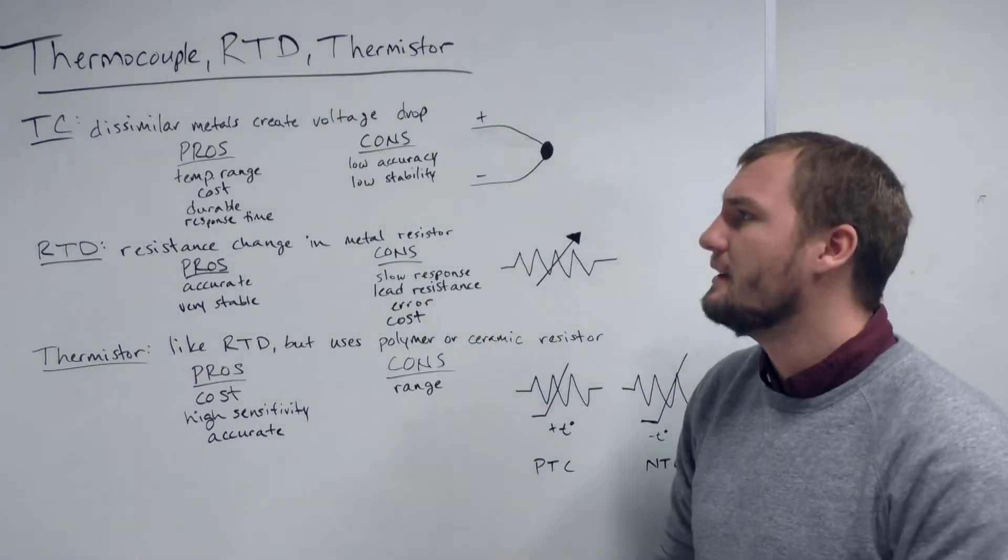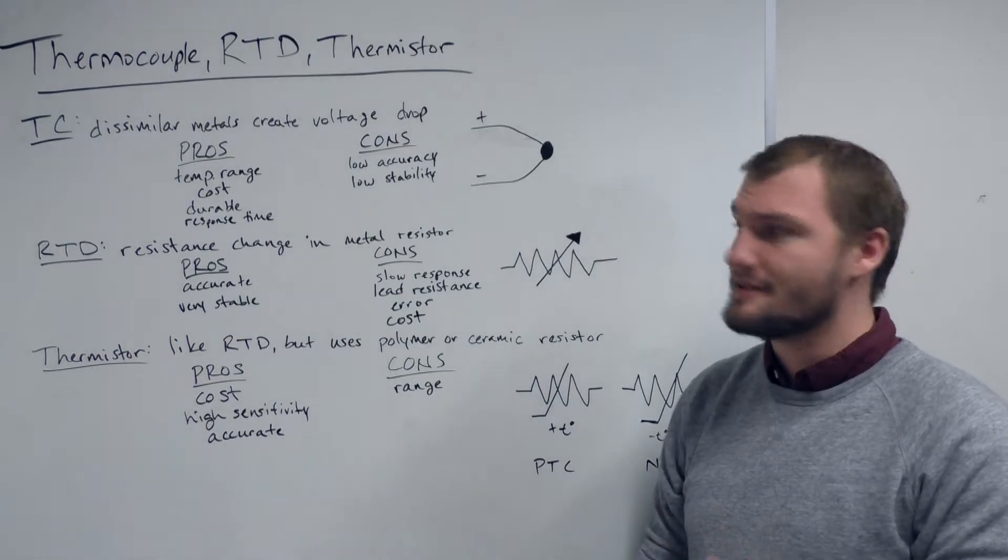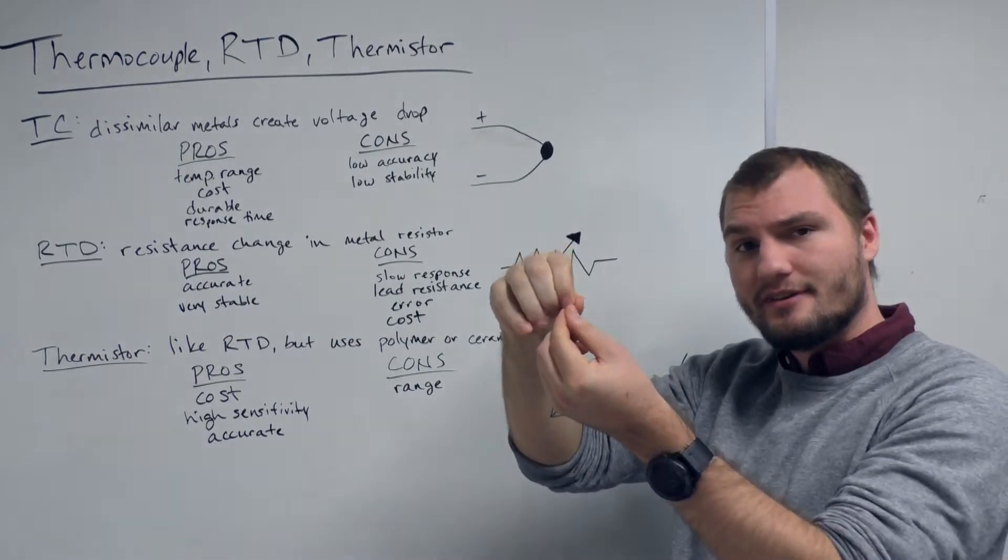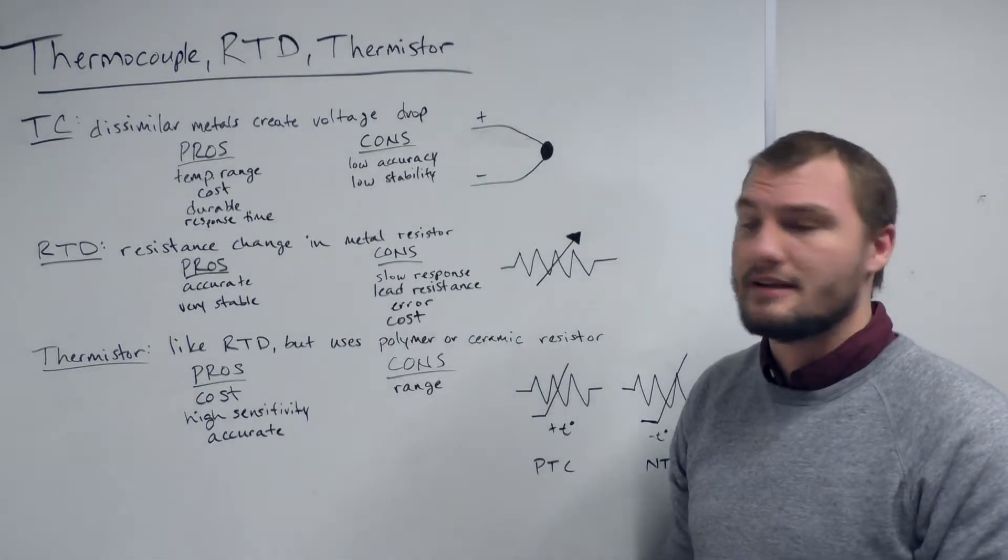First, we're going to start with the thermocouple. This is two dissimilar metals that are spun together at the tip to create a voltage drop at certain temperatures.